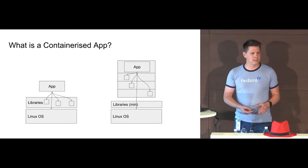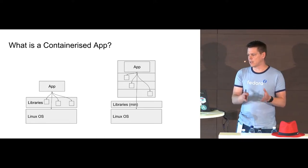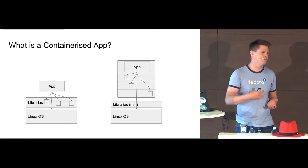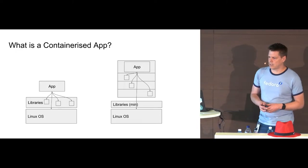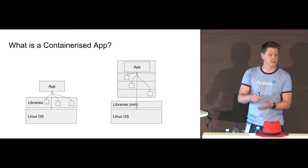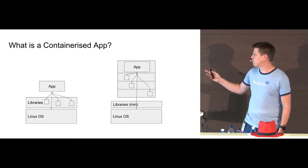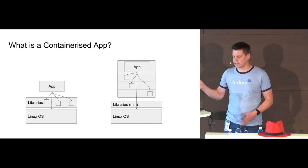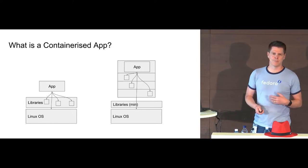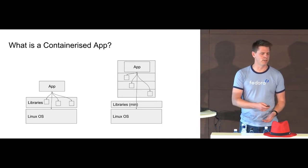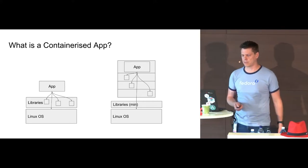When I containerize it, I do essentially the same thing. The only difference is we tell the kernel to put that application process into a set of namespaces, and we move those dependencies and libraries into a namespaced file system, so the application has all of its dependencies bundled together as part of an image. The application is still talking to that underlying Linux operating system — we're not virtualizing it, and that has a bearing on what types of applications you can and can't containerize.